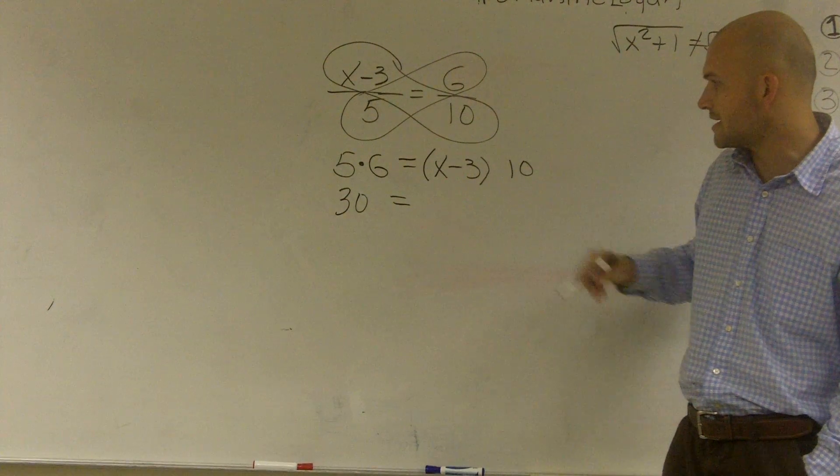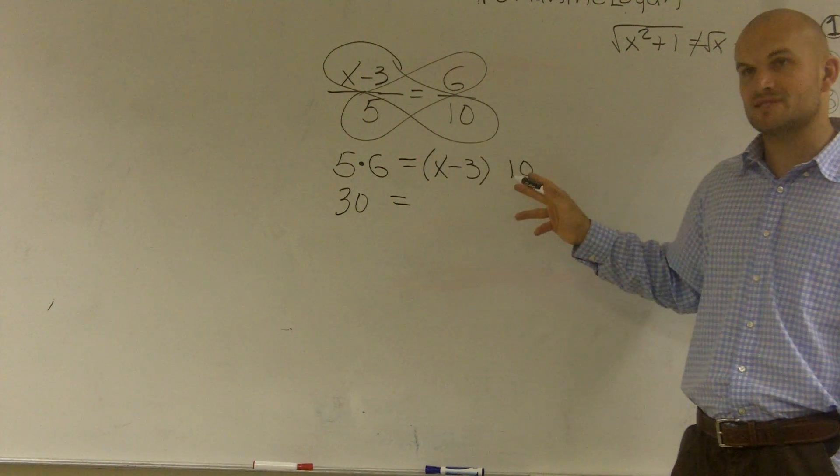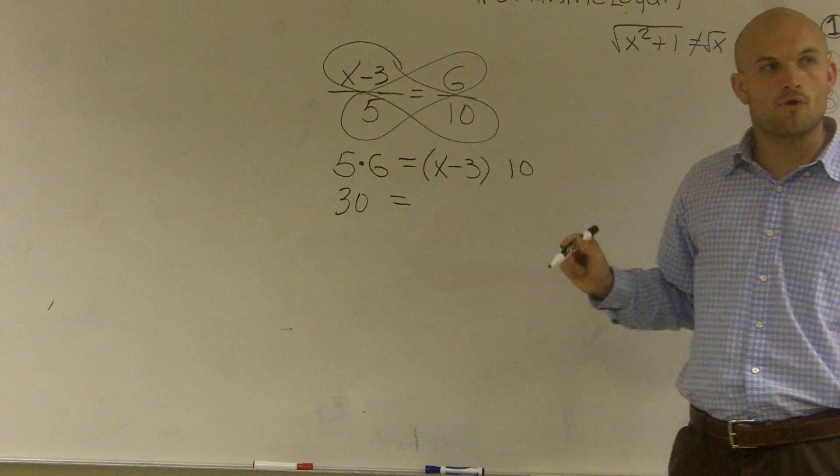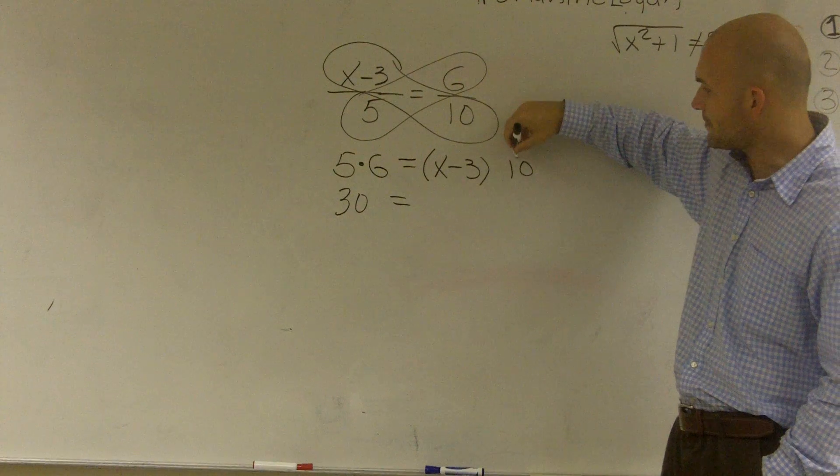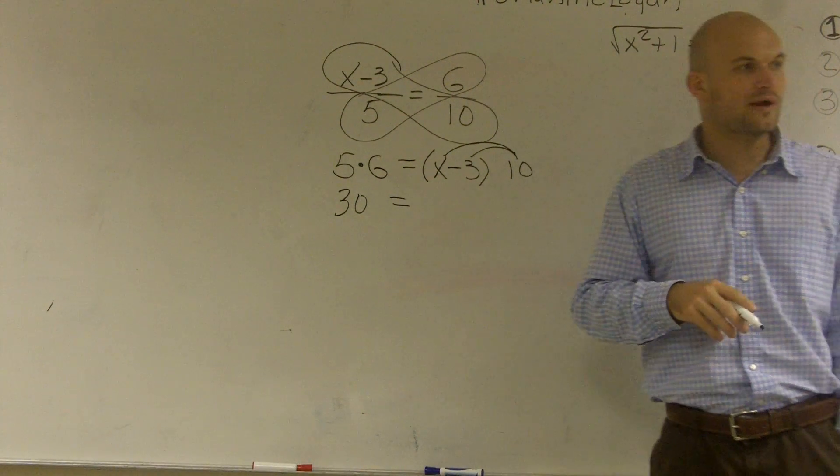Therefore I can get rid of the multiplication sign. So this is 10 or x minus 3 now times 10. When I have it now in this form, I know I can use distributive property where whenever you have a number outside of parentheses...